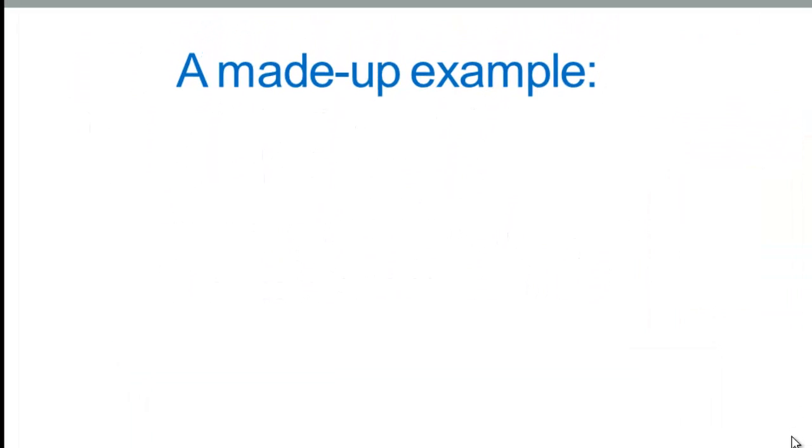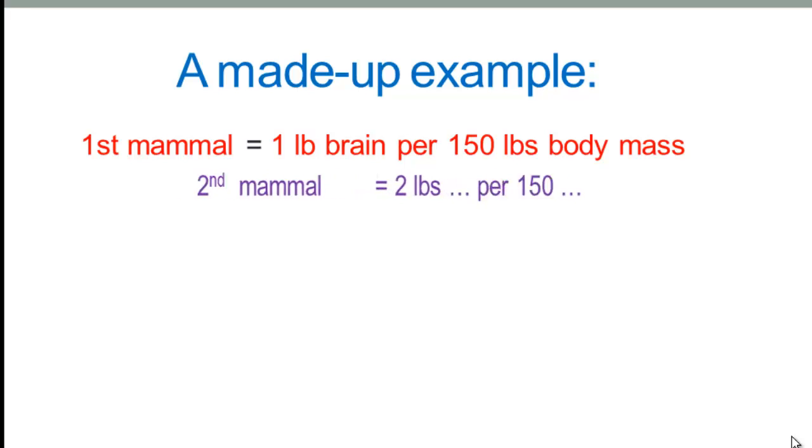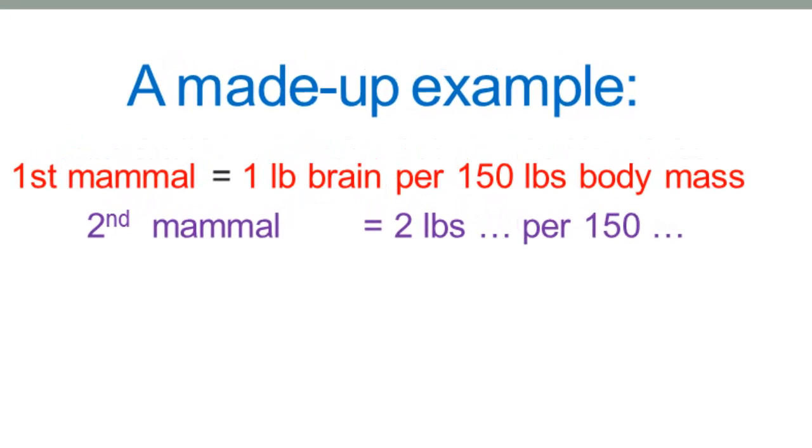So here's a made-up example with some nice easy math that's relevant to humans given our body size. And let's say we go out and we collect one mammal and we find that for that mammal there's one pound of brains per every 150 pounds of body mass. And then we capture a second mammal and we find there's two pounds of brain per every 150 pounds of body mass. And then we capture a third mammal, which seems to be a human being, because there we have three pounds of brain per 150 pounds of body mass.